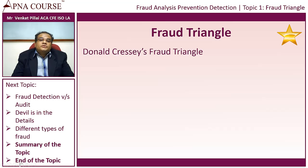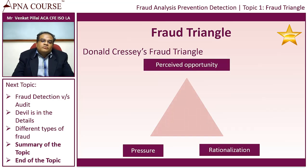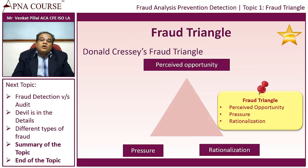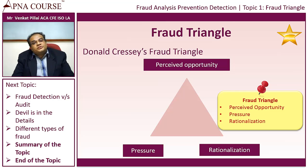Let's understand the aspects of a fraud triangle. He says there is a perceived opportunity, there is a pressure, and a rationalization. Perceived opportunity, pressure, and rationalization are the three key components of a fraud.